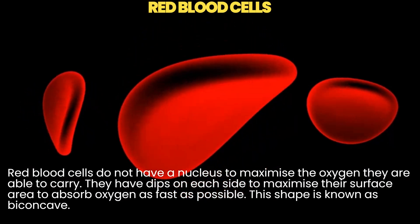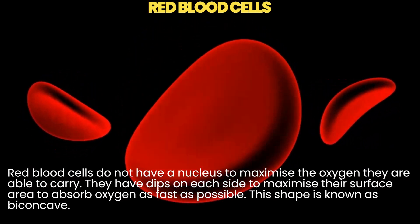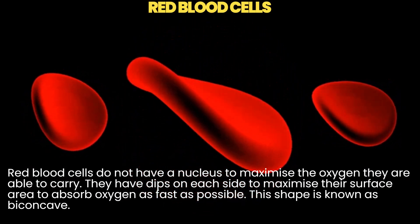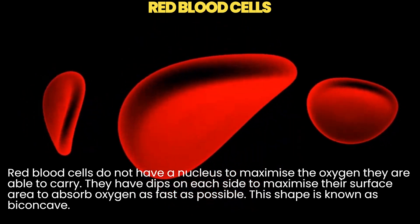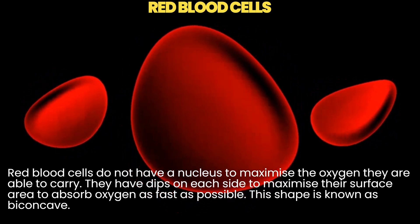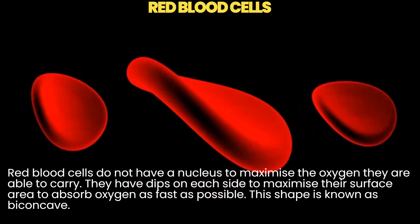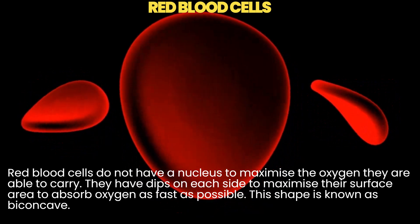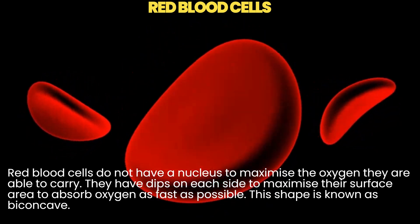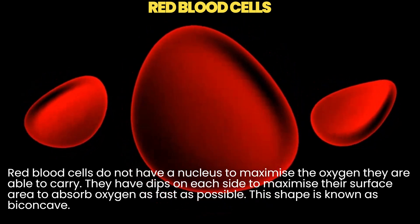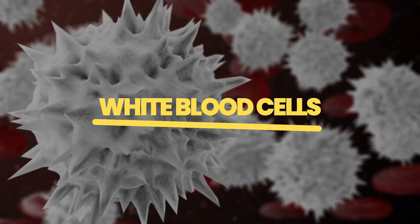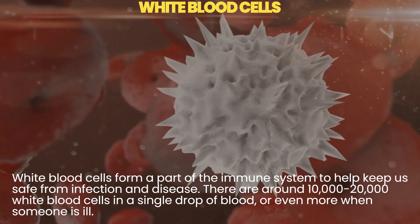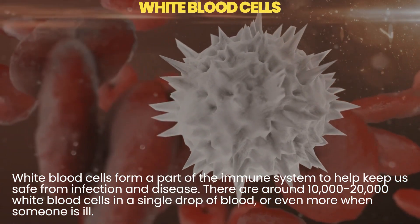Red blood cells do not have a nucleus, to maximize the oxygen they are able to carry. They have dips on each side to maximize their surface area, to absorb oxygen as fast as possible. This shape is known as biconcave.